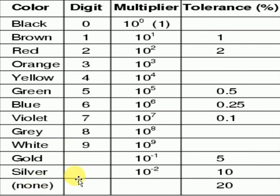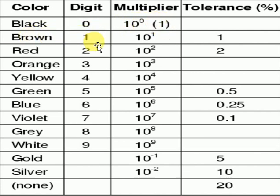Gold and silver get no digit assigned since there are only 10 digits from 0 to 9. After the digit bands, the next band represents the multiplier — that is 10 raised to the power of something. For example, black represents digit 0 so 10^0 = 1, brown represents 1 so 10^1 = 10, and so on. For gold the multiplier is 10^-1 and for silver the multiplier is 10^-2.